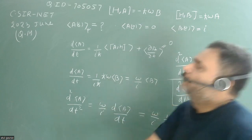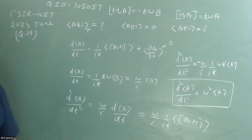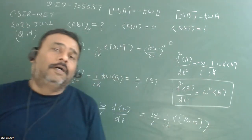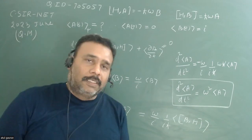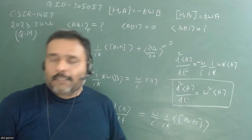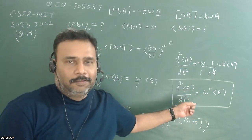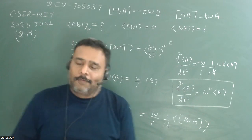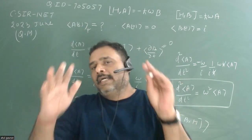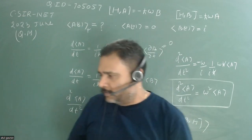We know the solution of this differential equation. Since there is no negative sign, the solution is a linear combination of e^(ωt) and e^(−ωt). This problem is now converted into a differential equation — that is the beauty of it. You start with quantum mechanics, go to the semi-classical theory, and finally land on a differential equation.